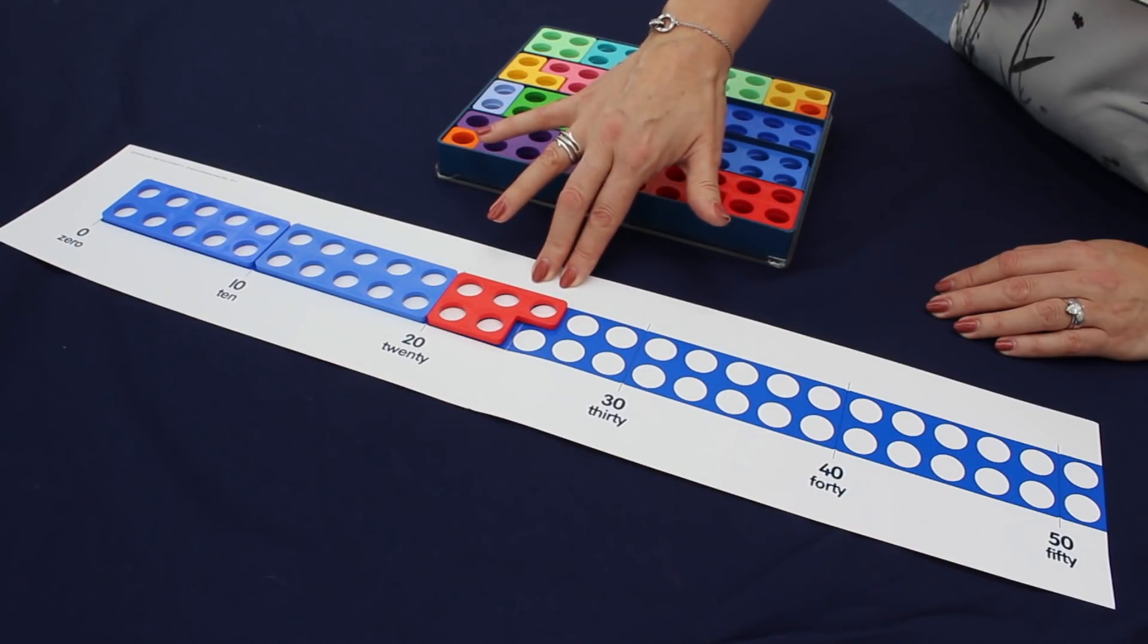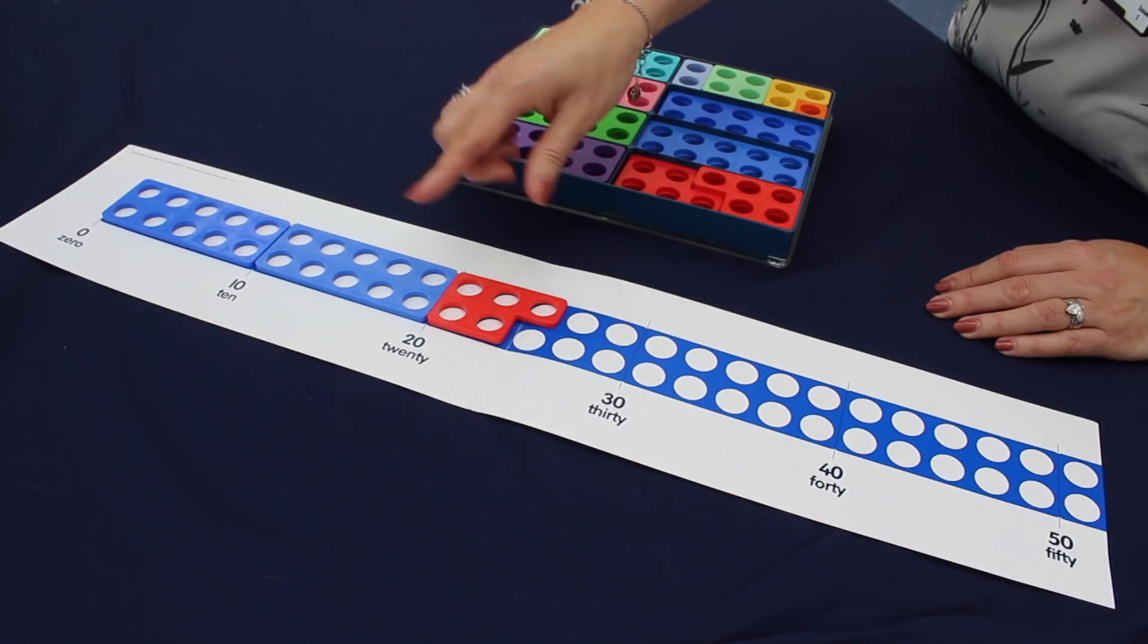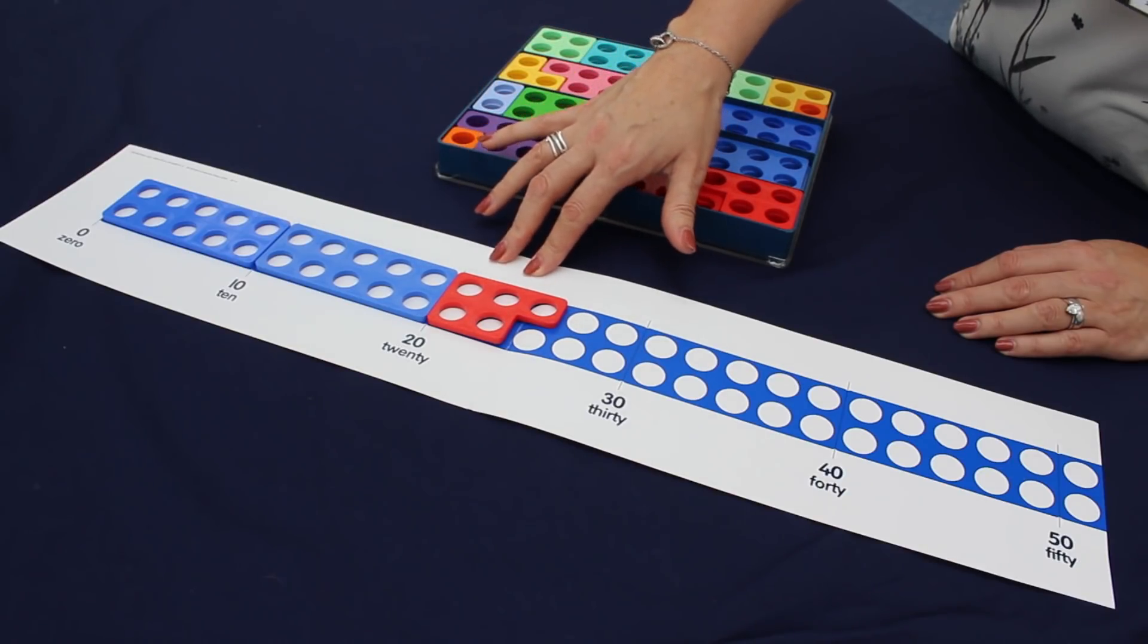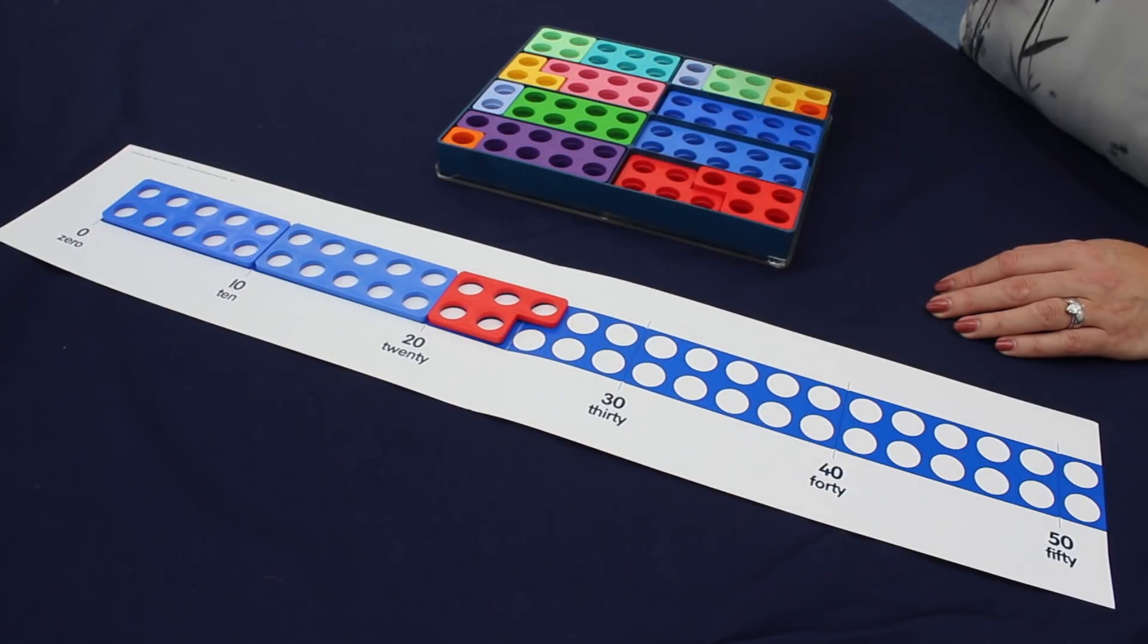There's a lovely little trick with Numicon though, because if you look here, the five shape looks like a hand, and it's pointing up, so it's telling you to round up when it's halfway. So the red number five looks like a hand pointing up, so we always round to the next ten.